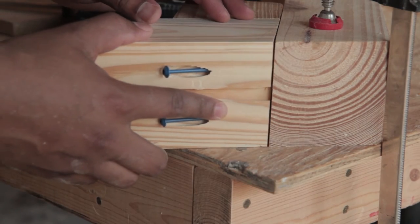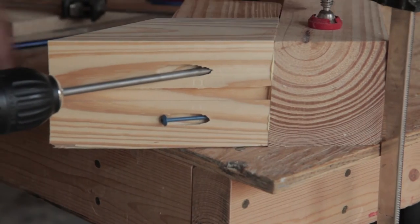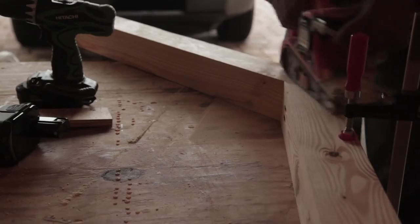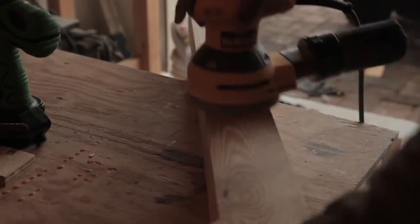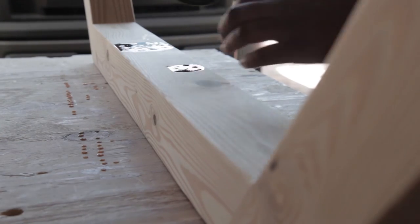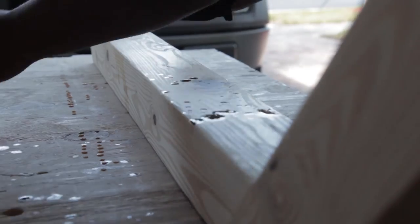Wood glue. Here I used belt sander and orbital sander to get everything smooth. Danish oil. Spilled Danish oil.